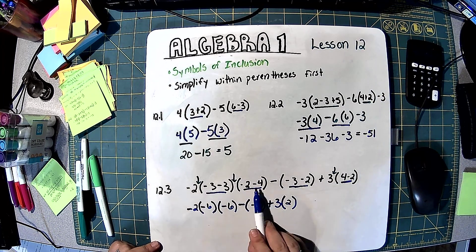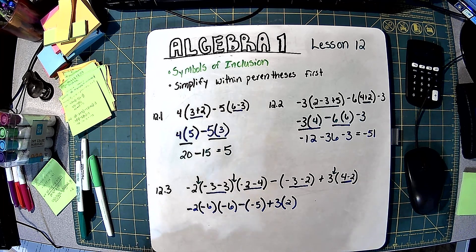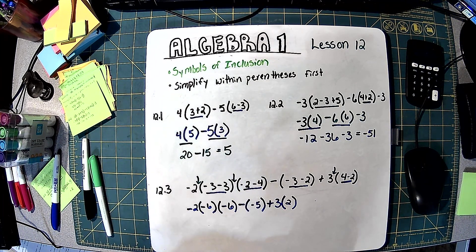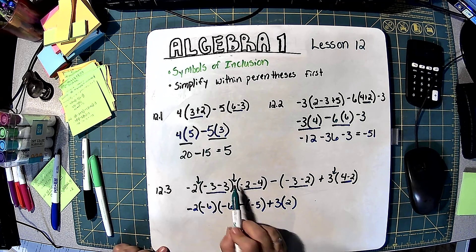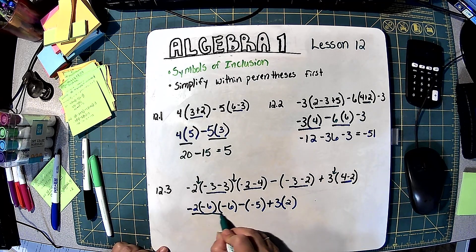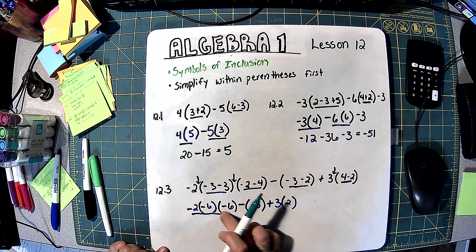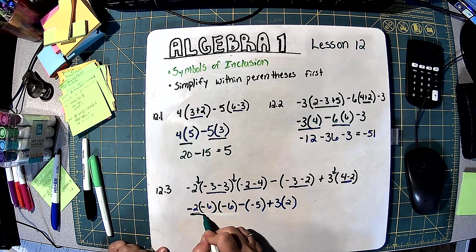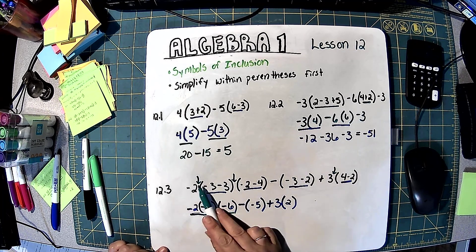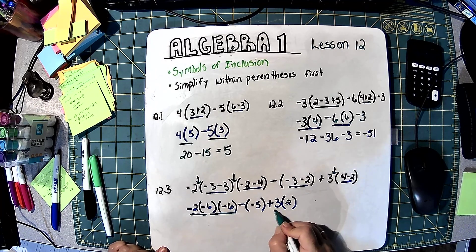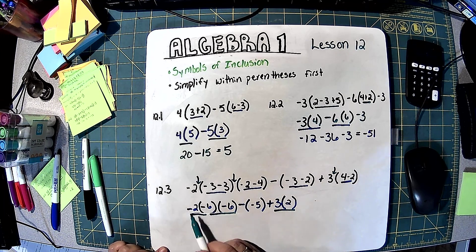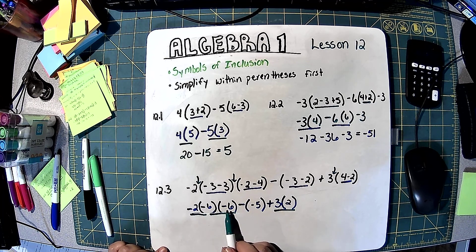Now I've simplified inside all of my parentheses. I'm going to go through with the multiplication where I put those arrows — all three of those because they're all touching with no signs in between. So 2 times 6 is 12, and that would be positive 12. Then 12 times 6 is 72, and that would be negative 72.